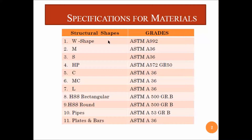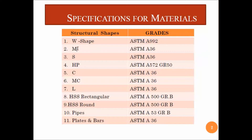The first shape is the W shape. W shape is similar to an I-section but it has very wide flanges. Its purpose is that we mostly use it in beams and columns.